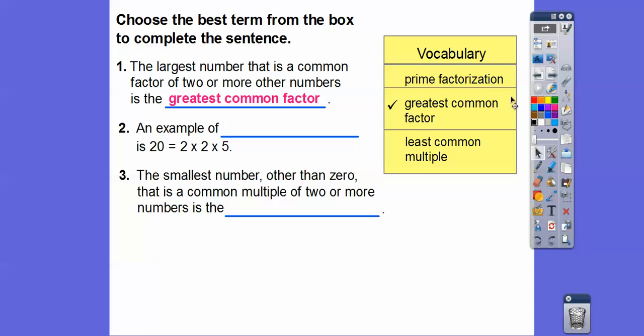So an example of 20, which equals 2 times 2 times 5, well this is prime factorization. So an example of prime factorization is 20 equals 2 times 2 times 5. And the smallest number, other than 0, that is a common multiple—the key word is multiple, and smallest—would be least common multiple. So the common multiple of two or more numbers, the smallest one, is going to be the least common multiple.